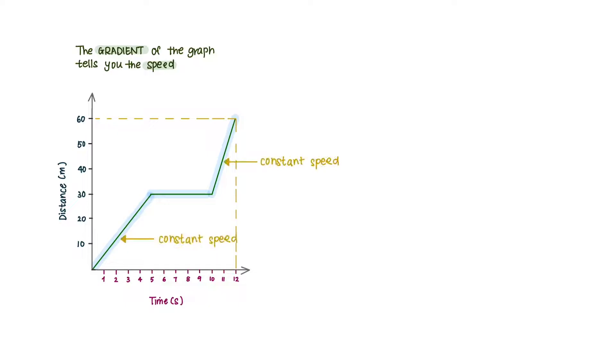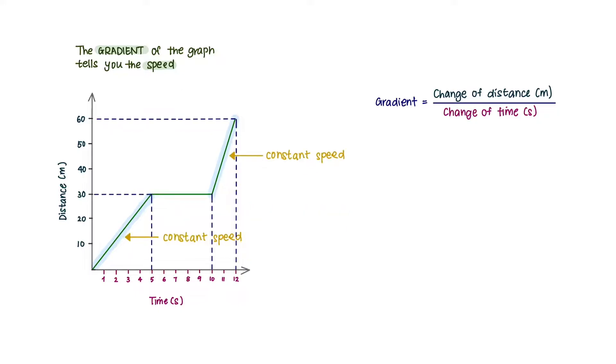A straight line represents constant speed, a flat horizontal line means the object is stationary. Since the gradient is the change of distance over change of time, which is the formula for speed, we can calculate the speed for each section.